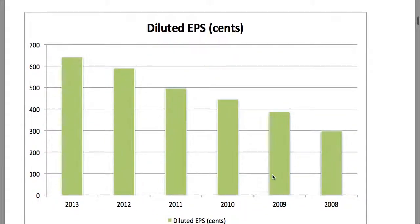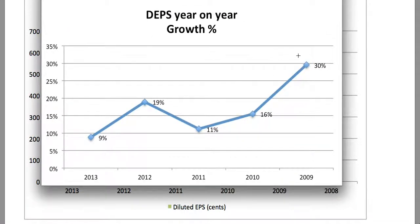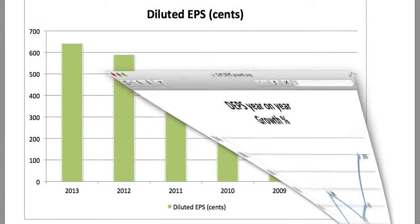Looking at the diluted earnings per share, we can see that there is somewhat of a growth in the diluted EPS position of the company. The growth from 2008 to 2009 was 30%, 2009 to 2010 was 16%, 2010 to 2011 was 11%, it jumped back to 19% from 2011 to 2012, and now back to 9%. So there is somewhat of a drop in the average diluted earnings per share growth of the company.